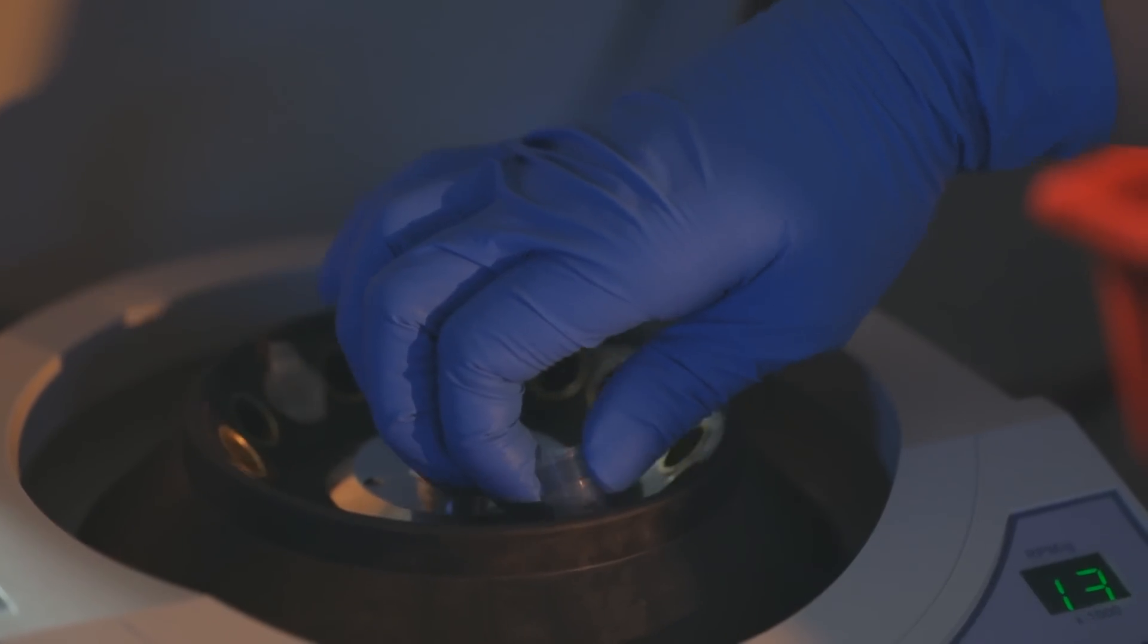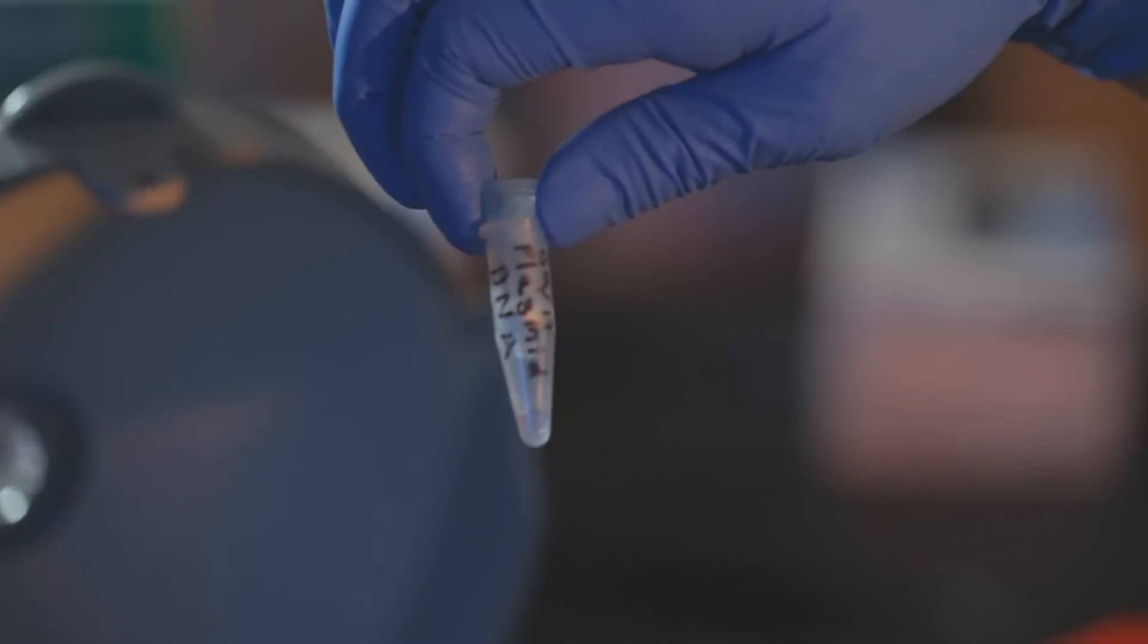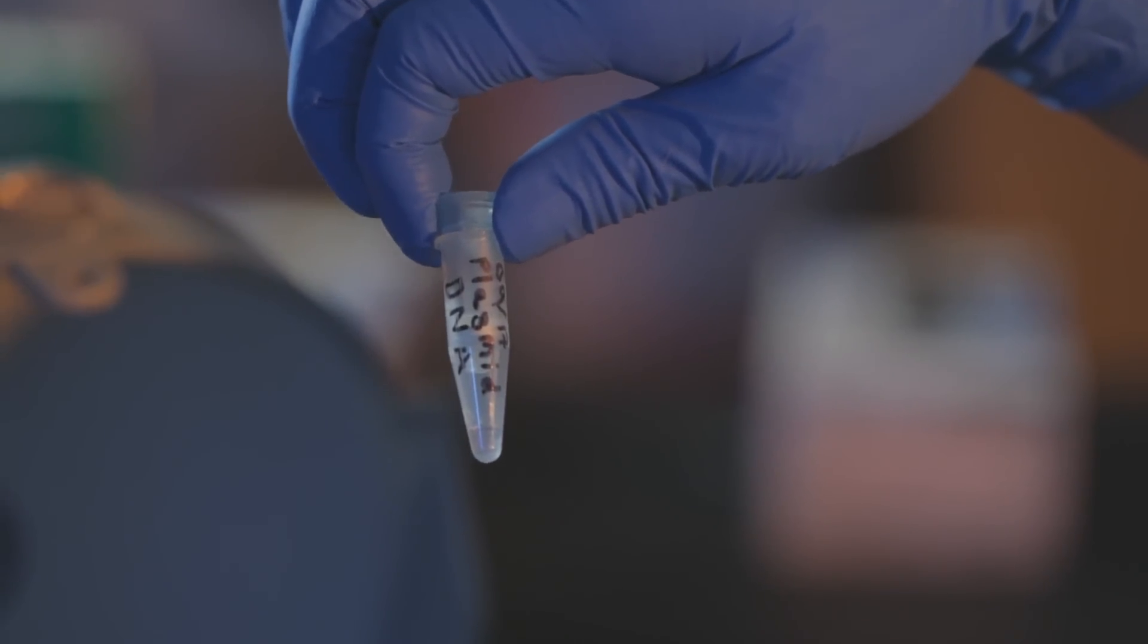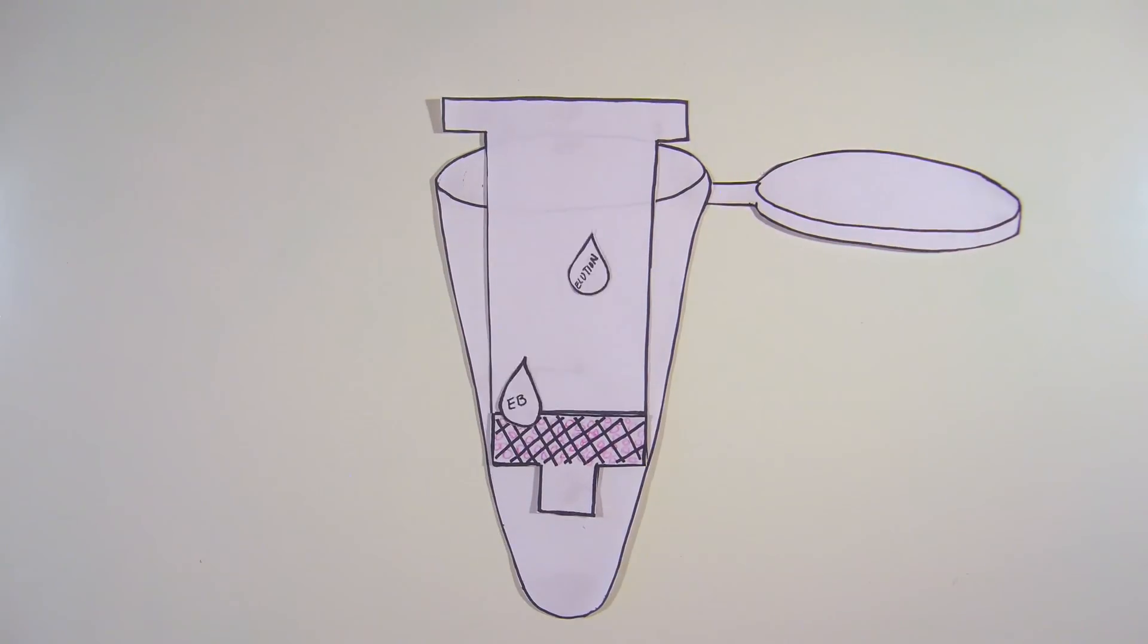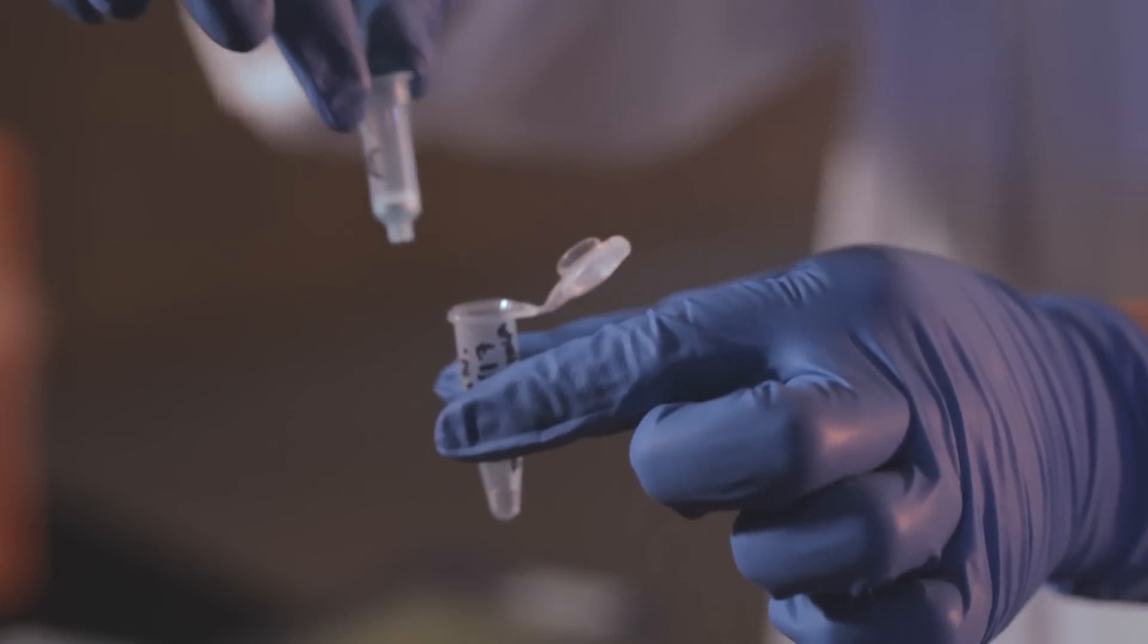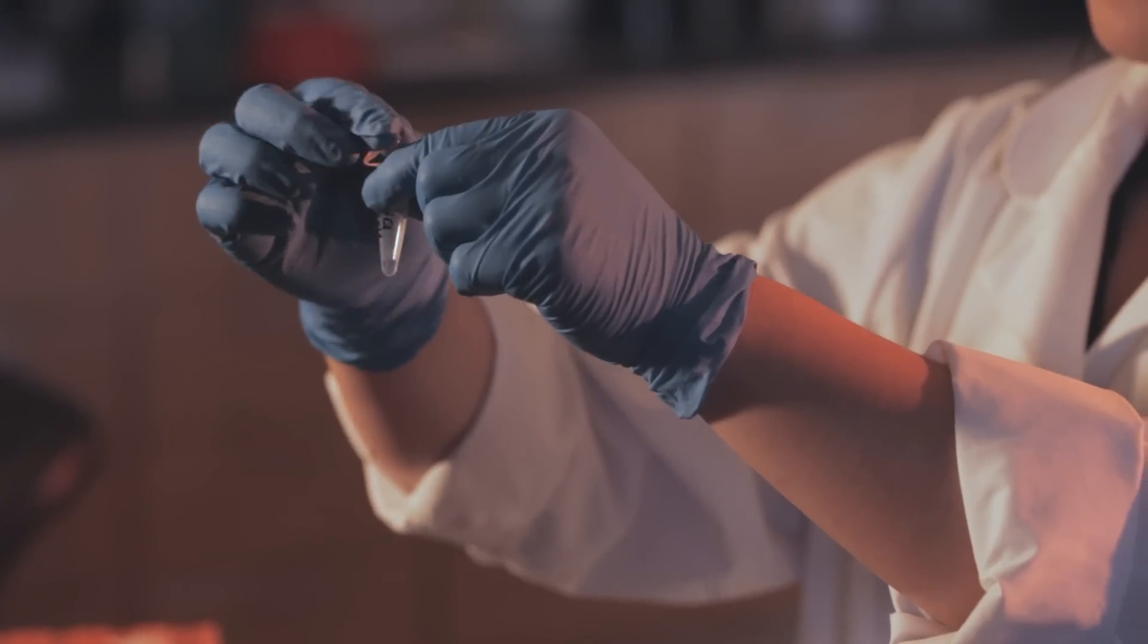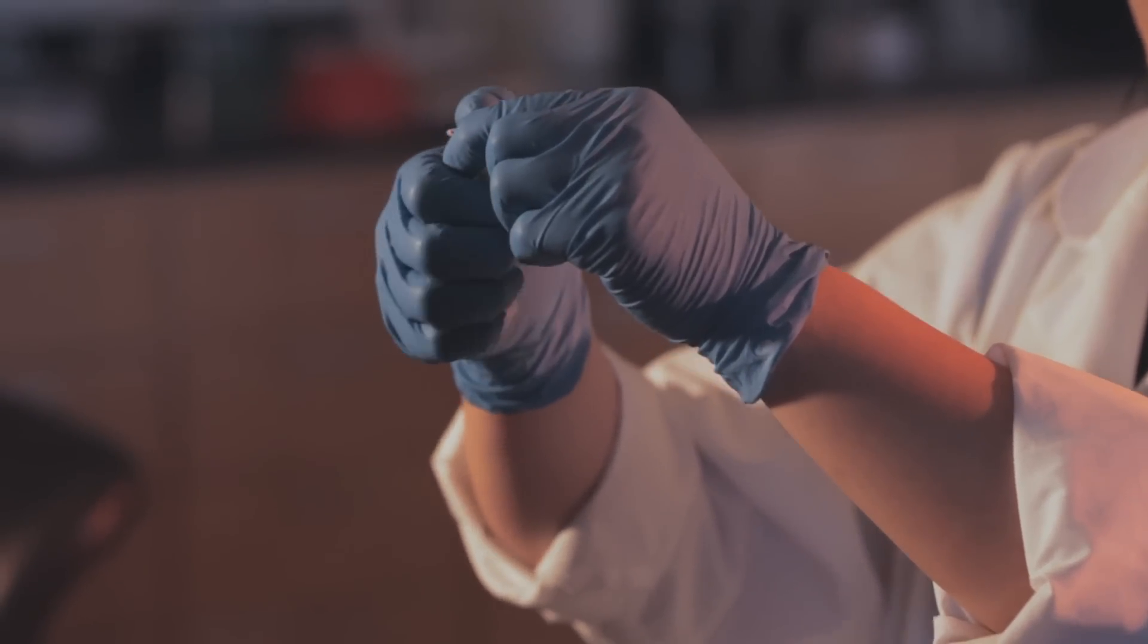After centrifugation, you should see about 50 microliters of clear, colorless liquid in the bottom of your microcentrifuge tube. This contains purified plasmid DNA. Discard the spin column, but keep and store your tube of purified plasmid DNA.